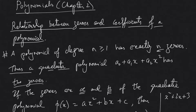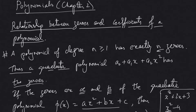Every quadratic polynomial will have two zeros. Examples include x² + 2x + 3, where the degree is 2, and also x² - 4. Our concern is only with the degree — as long as the degree of a polynomial is 2, it will be considered a quadratic polynomial.